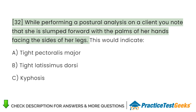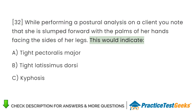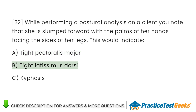While performing a postural analysis on a client, you note that she is slumped forward with the palms of her hands facing the sides of her legs. This would indicate: A. Tight pectoralis major. B. Tight latissimus dorsi. C. Kyphosis.